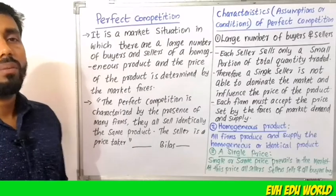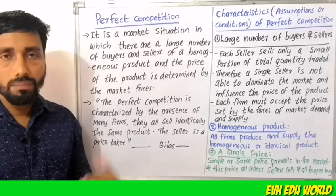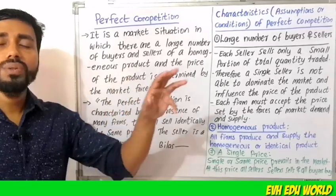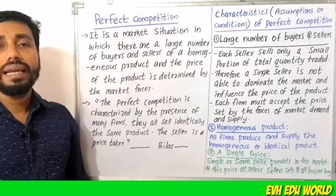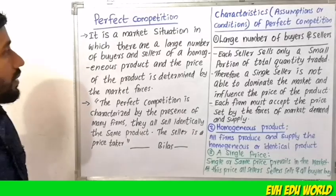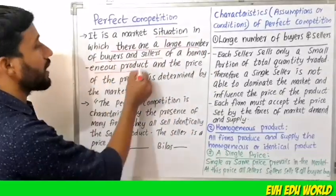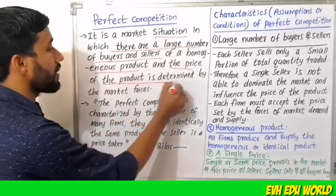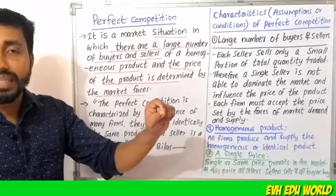The market structure in managerial economics called perfect competition covers its features, assumptions, and conditions. Perfect competition is a market situation in which there are a large number of buyers and sellers of homogeneous products. The price of the product is determined by the market forces of demand and supply.